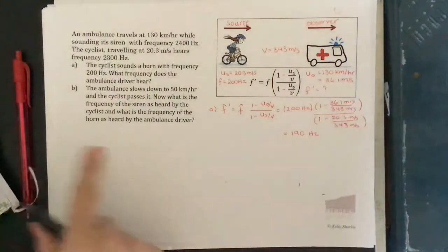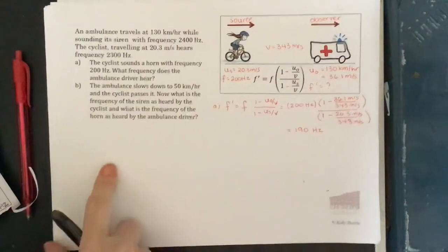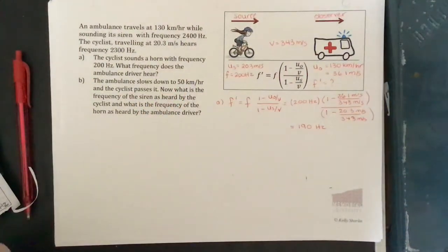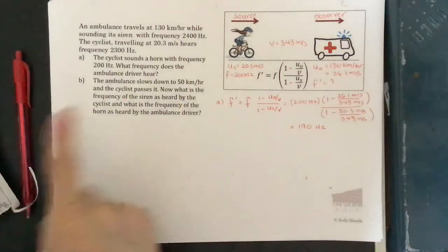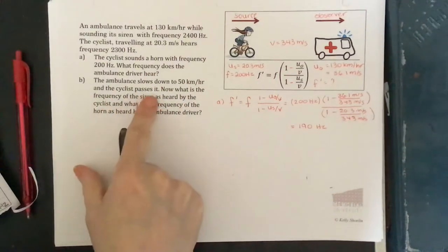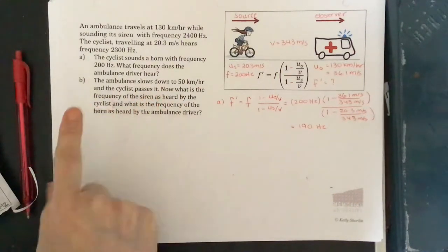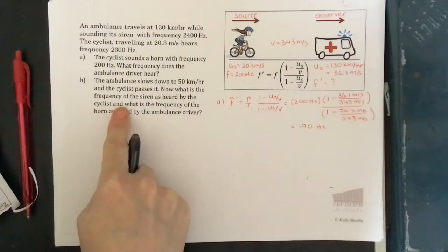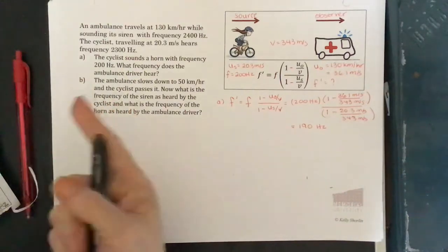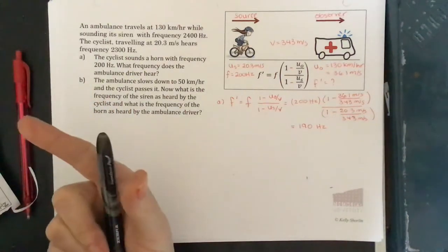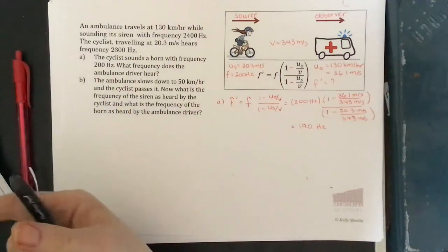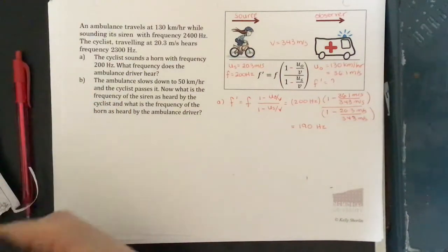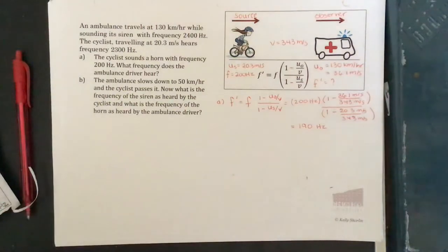Now for the next part: the ambulance slows down to 50 kilometers per hour, so now it's going slower than the cyclist, and the cyclist passes the ambulance. What does everybody hear — what does the cyclist hear from the ambulance siren, and what does the ambulance driver hear from the cyclist's horn?